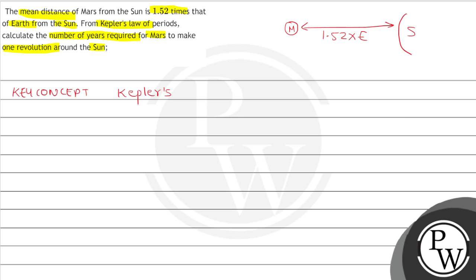Kepler's law of periods expressed in ratio as a_M divided by a_E whole power 3 is equal to time period of M upon time period of E square.